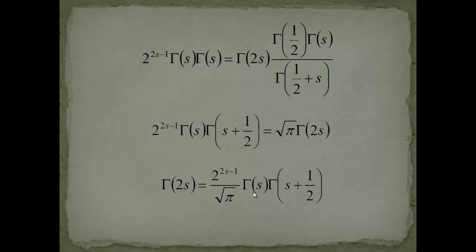This formula is very important for finding the relationship between the zeta function and the gamma function. We will use the functional equation of the zeta function together with Legendre's duplication formula and the relationship between the gamma function and the sine function. The next video will be about that relationship between the gamma function and the zeta function, and then I will head forward to derive the Riemann functional equation. I hope you had fun — please subscribe and see you next time!